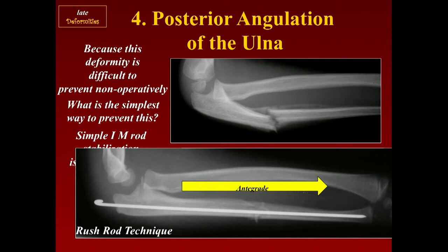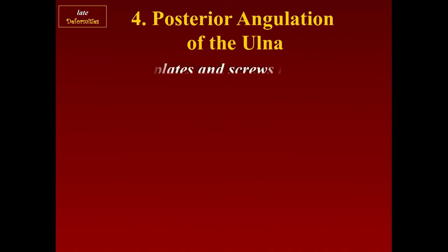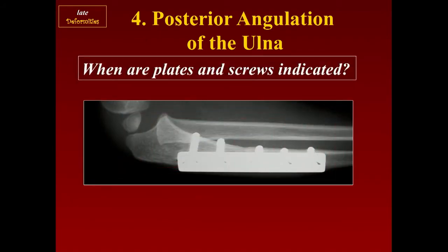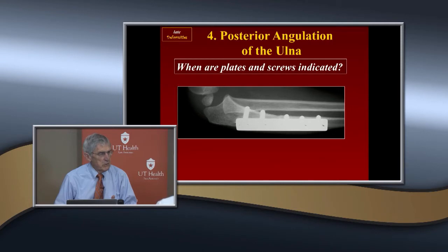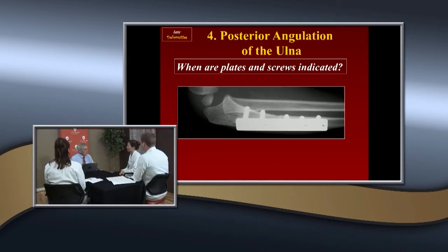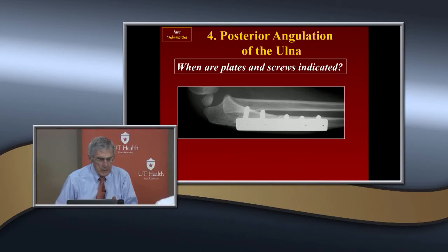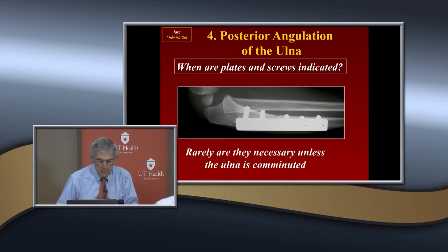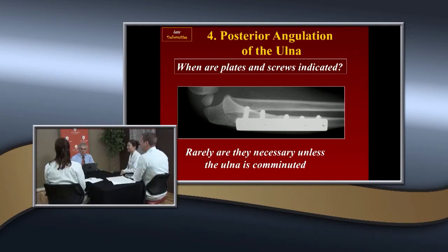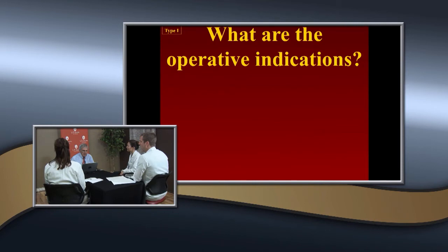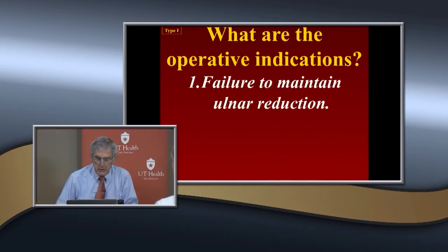In adults, plates and screws are used for better cortical contact, especially with comminution. In children, operative indications include: inability to reduce the ulna, length-unstable or comminuted fractures (an IM rod is minimally invasive and simple), or failure to reduce the radial head. If you can't get the radial head in, the usual problem is interposed tissue.